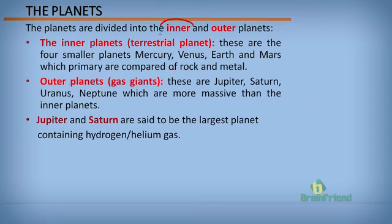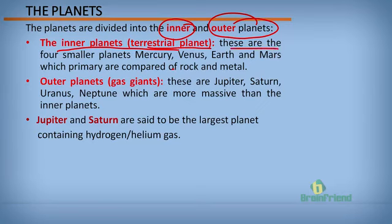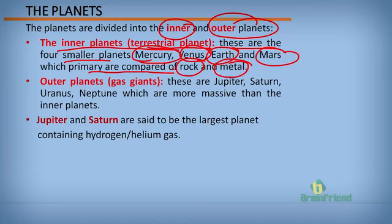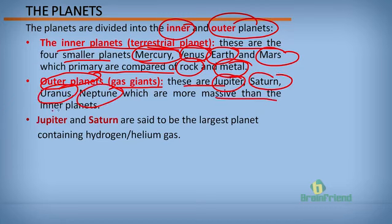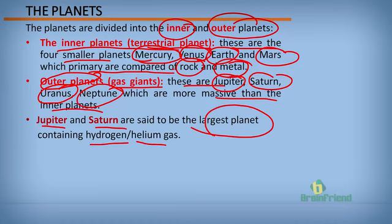The planets are divided into inner and outer planets. The inner planets, also referred to as terrestrial planets, are four smaller planets — Mercury, Venus, Earth, and Mars — which are primarily composed of rock and metal. The outer planets are also called gas giants. These are Jupiter, Saturn, Uranus, and Neptune, which are more massive than the inner planets. Jupiter and Saturn are said to be the largest planets, containing hydrogen and helium gas.